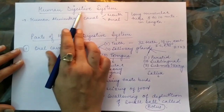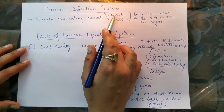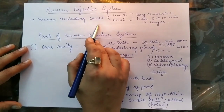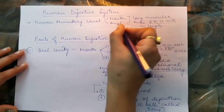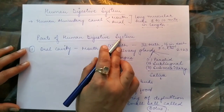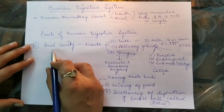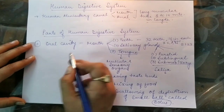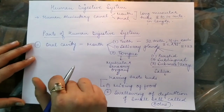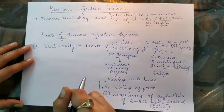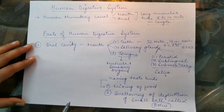Now let's start with the human digestive system. It consists of an alimentary canal, which is a long muscular coiled structure about 8 to 10 meters in length. It starts from the mouth and ends at the anus. The parts include the oral cavity (mouth), followed by a long tube-like structure called the esophagus, then a J-shaped structure called the stomach, then the small intestine, then the large intestine. The undigested food is stored in the rectum and then passes out through the anus.